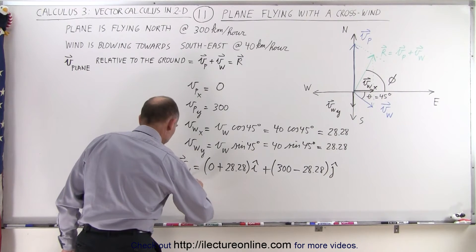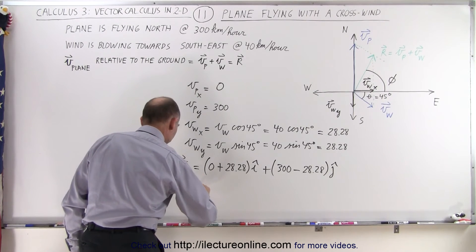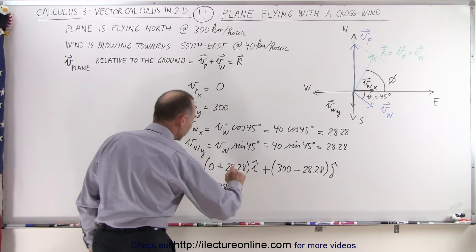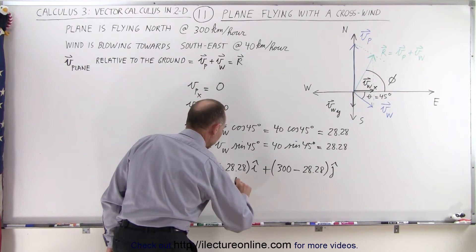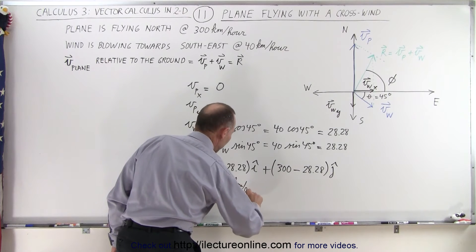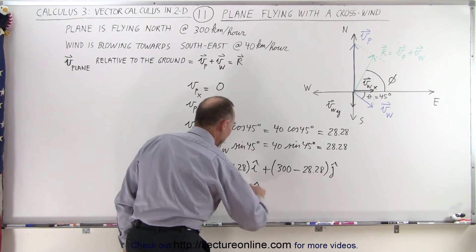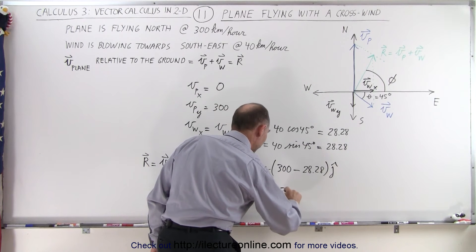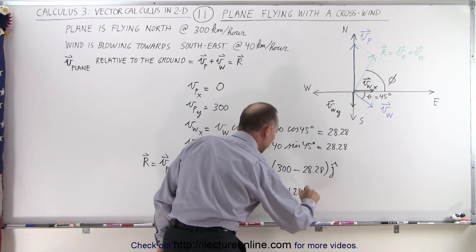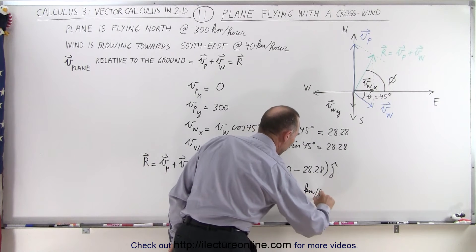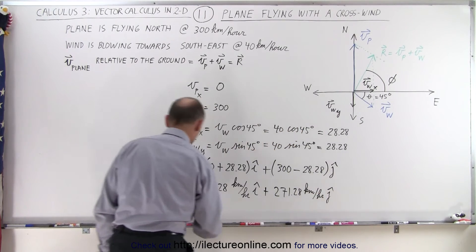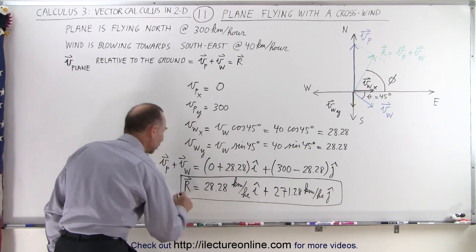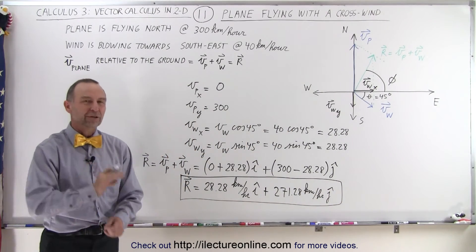Adding the components together, the resultant is 28.28 kilometers per hour in the x direction plus 271.72 kilometers per hour in the y direction. This is the resultant velocity of the plane relative to the ground expressed in vector component format.